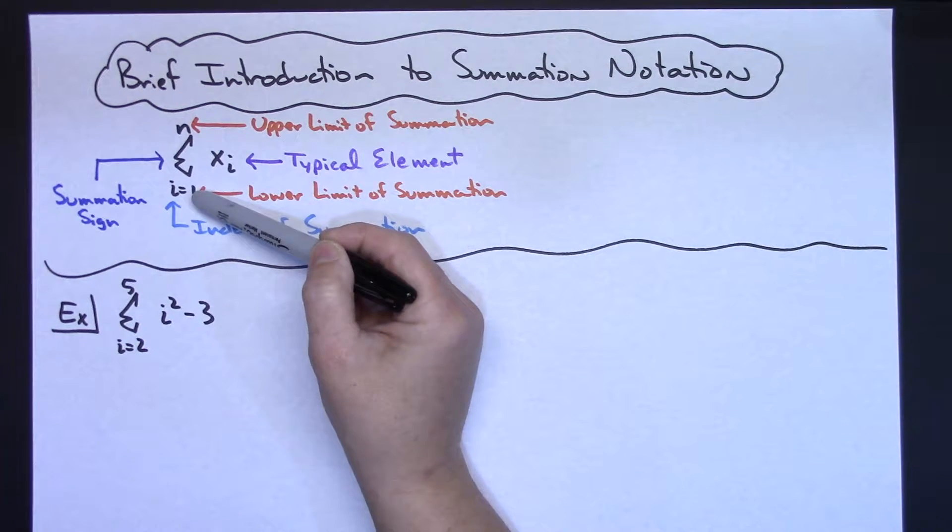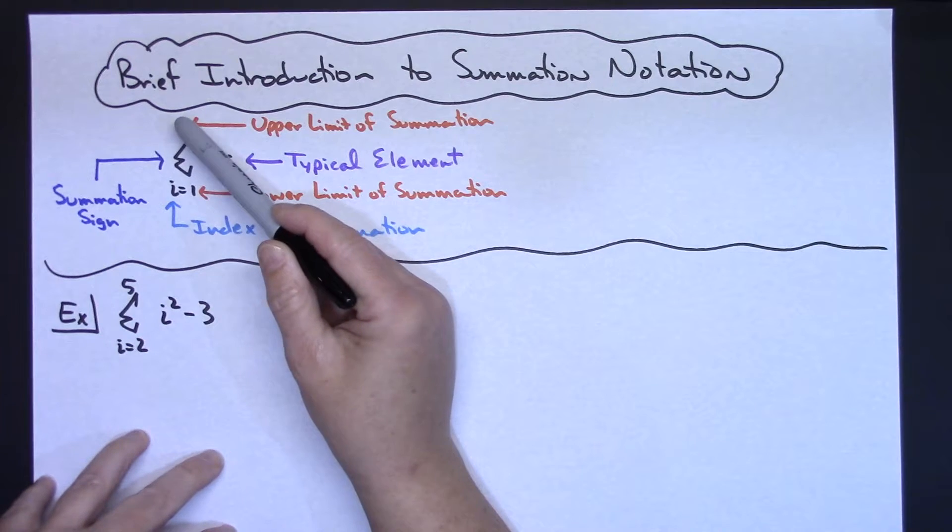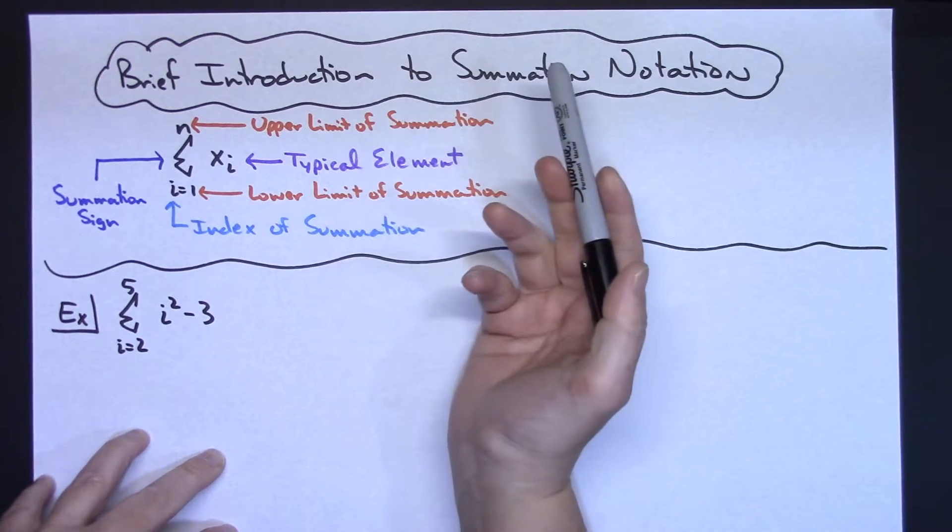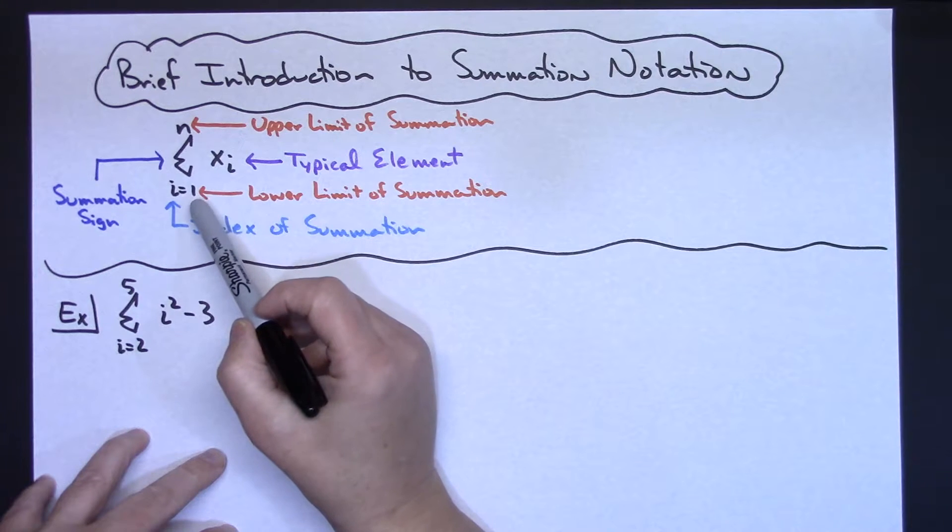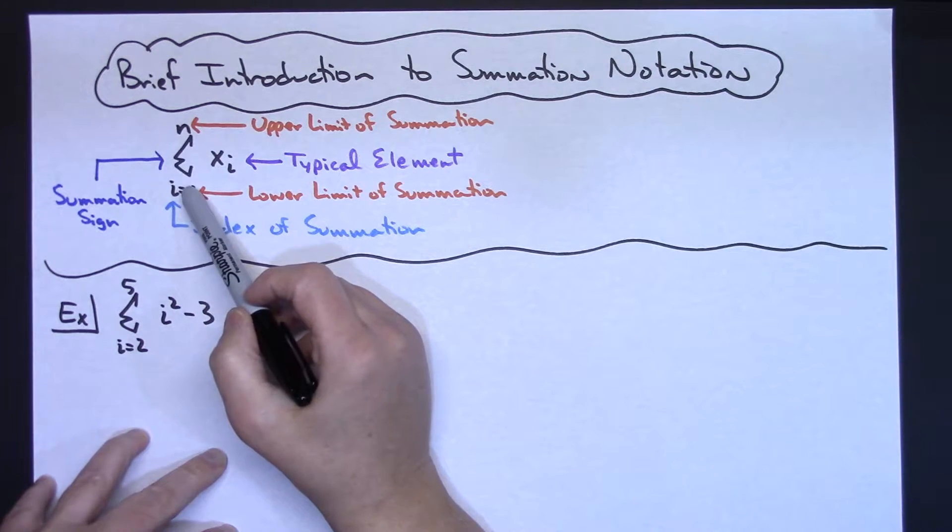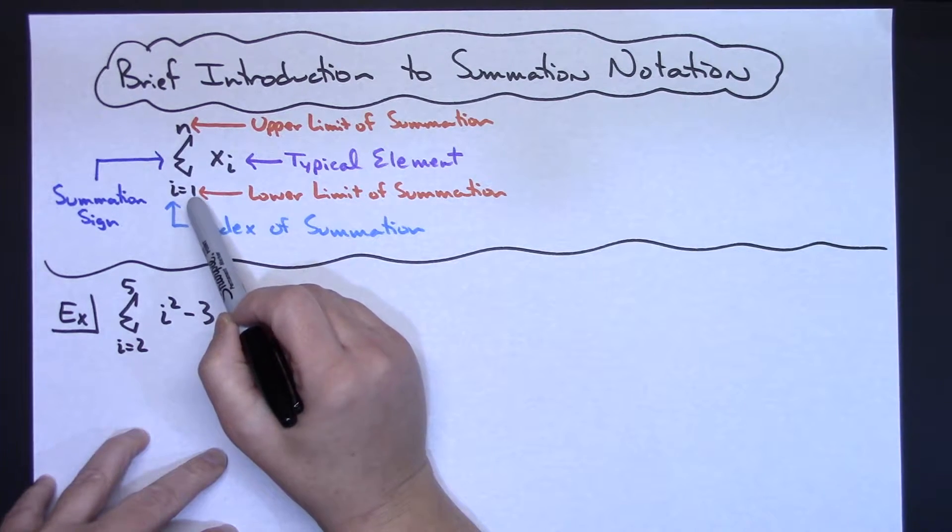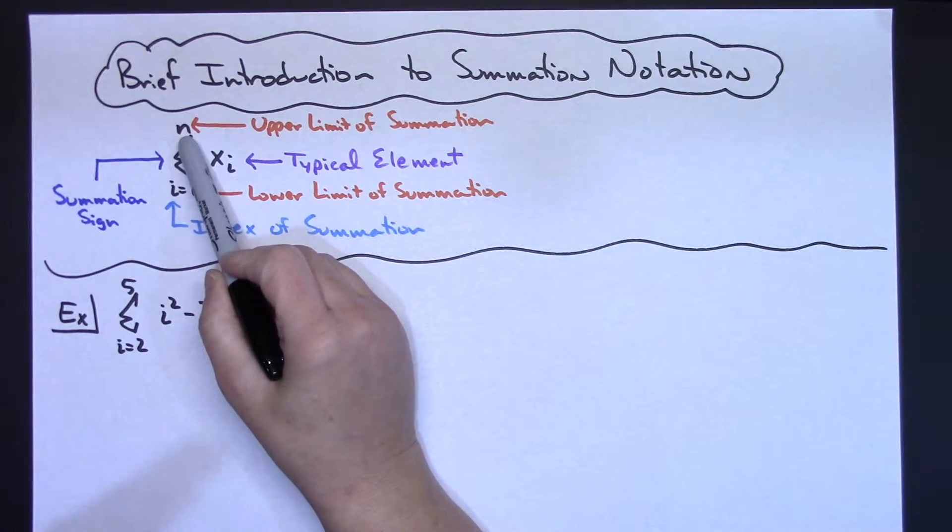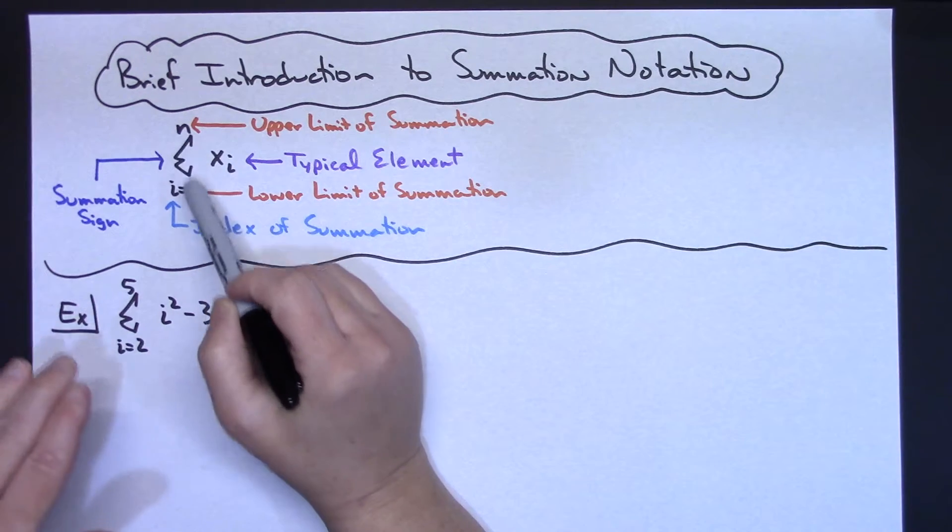Your 1 here, or whatever number it happens to be, up to the number that would be on top, those are your lower and upper limits of your summation. On this generically written here, my summation would start at 1 and go to n, so whatever number was there, if it was 5, my summation would run from 1 to 5.